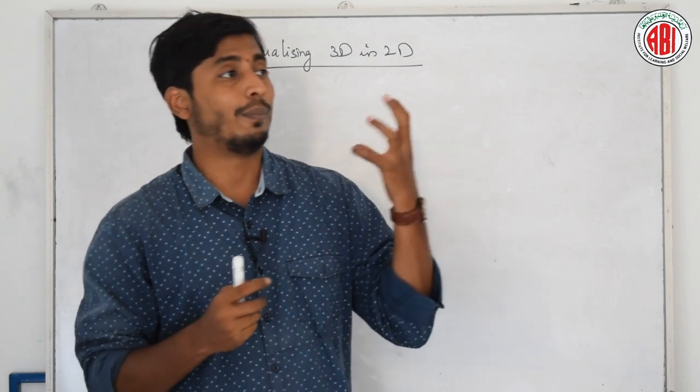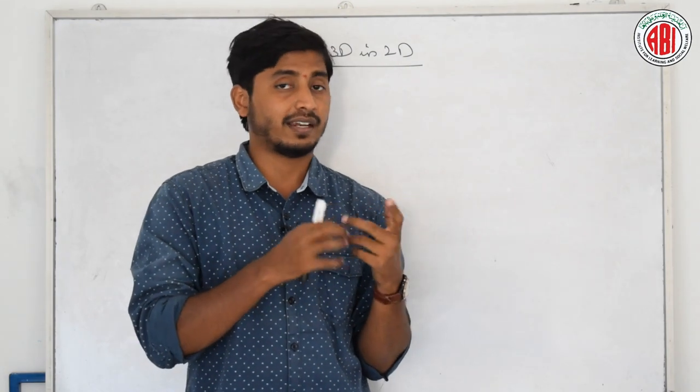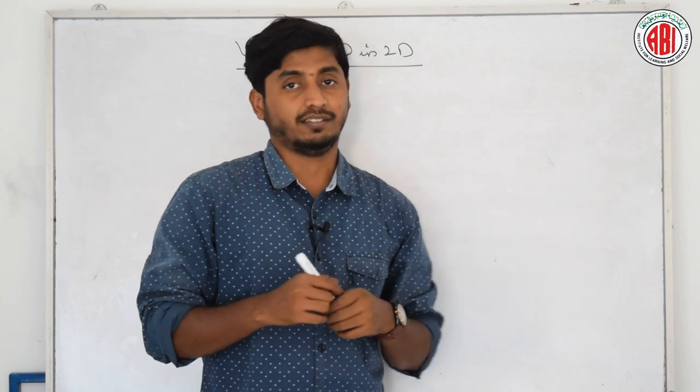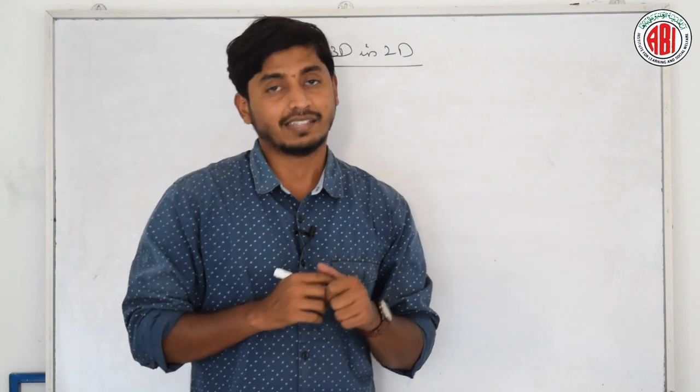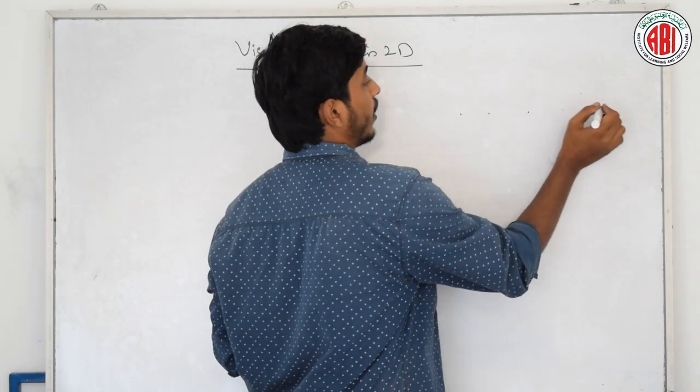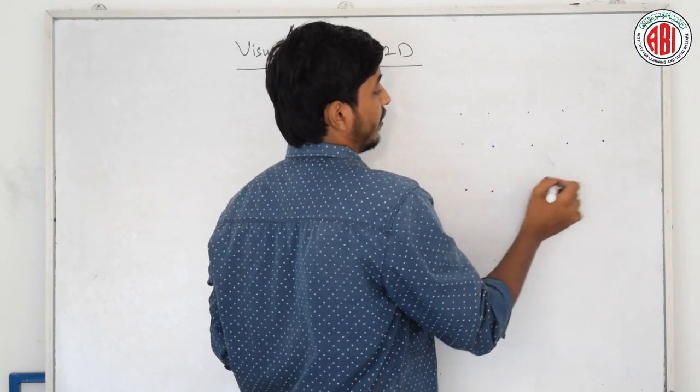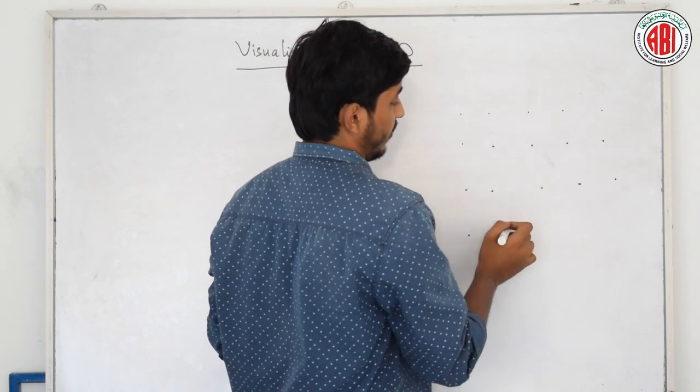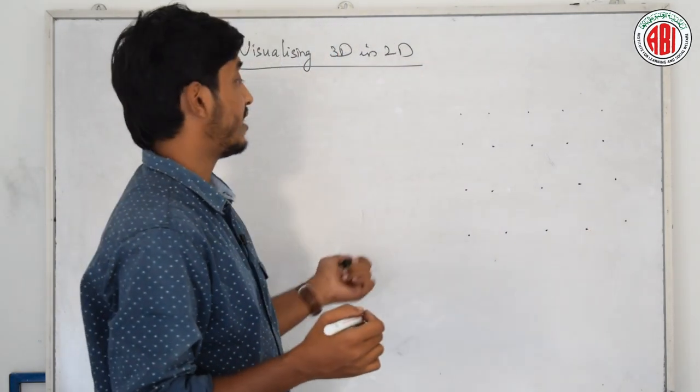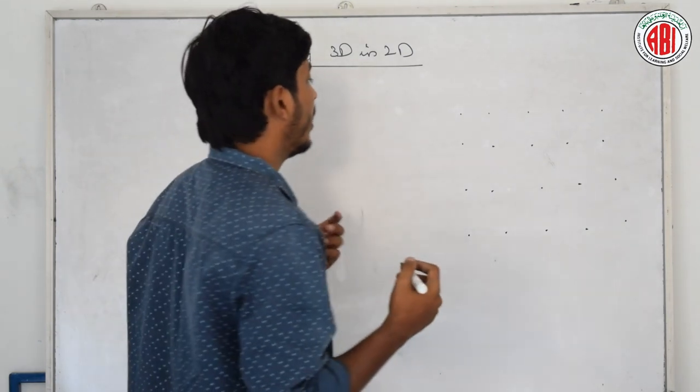Then how do I represent a box? A 3D object. A box is a 3D object. It has length, breadth and height. How do I represent a box in a plain sheet? By using a dotted sheet. By using this pattern, we will get this kind of sheets. Even you can find it at the end of your textbook. We can visualize a 3D object.